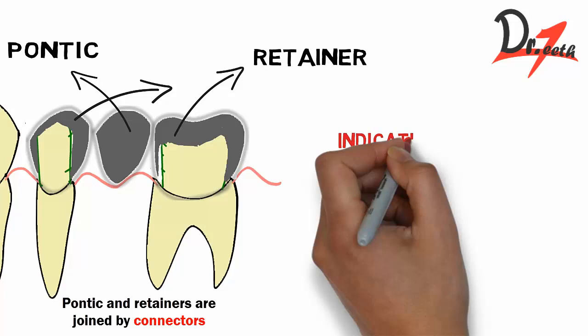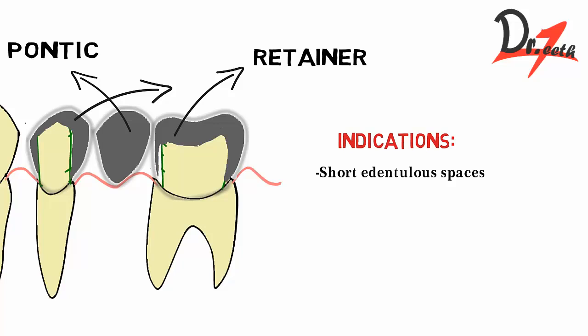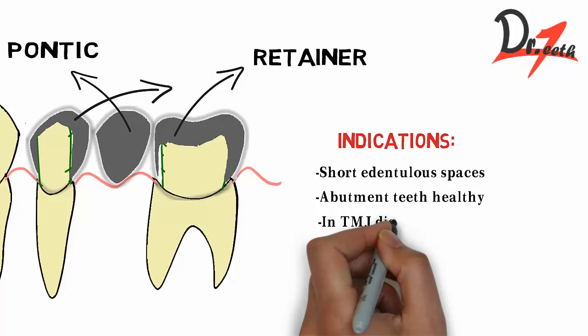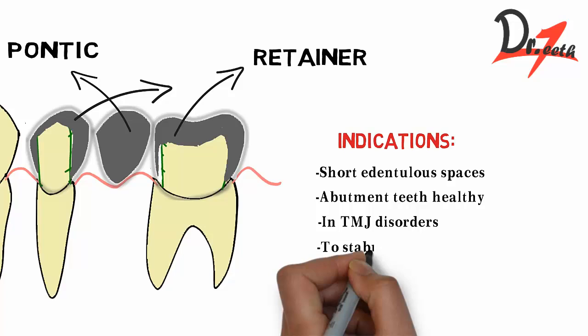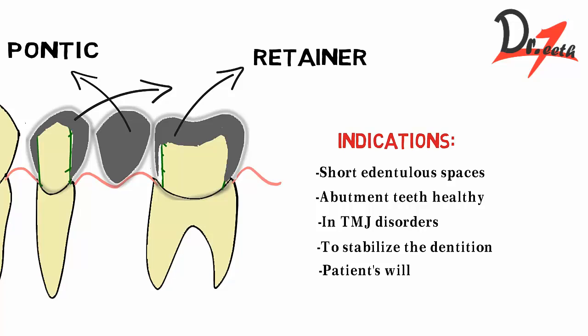Indications means when do we give FPD, or when do we prefer FPD over RPD. When you have short edentulous spaces, we give FPD because the abutment will be able to handle that load. When the abutment teeth are healthy, you can obviously give it. In TMD disorders we can give FPD because it will help in harmonizing the occlusion. It is also given to stabilize the dentition, and if the patient is willing to have it, then you obviously give it.